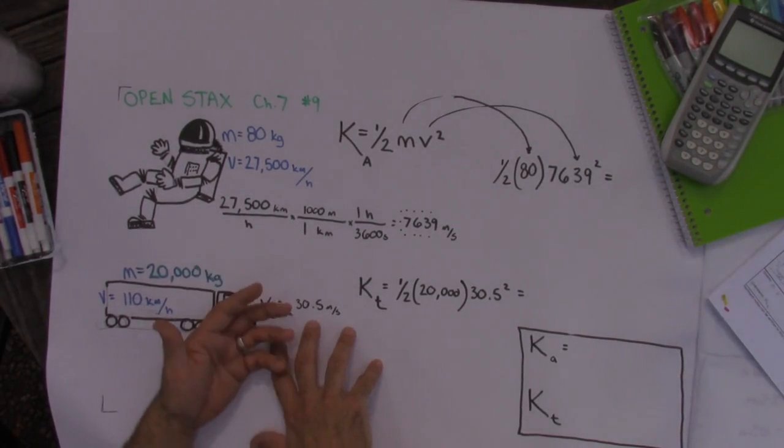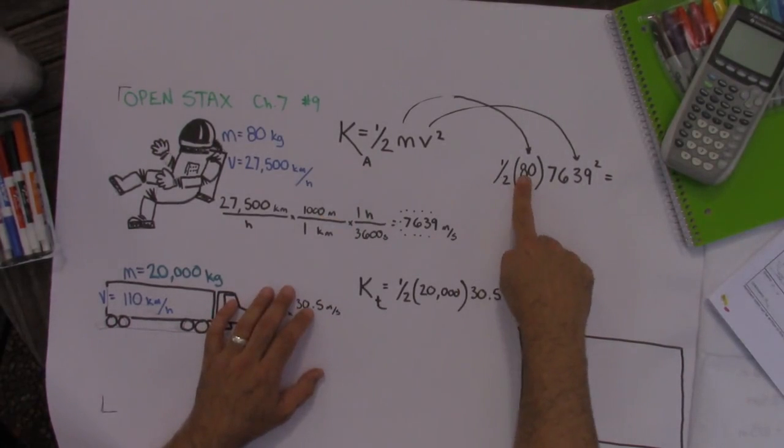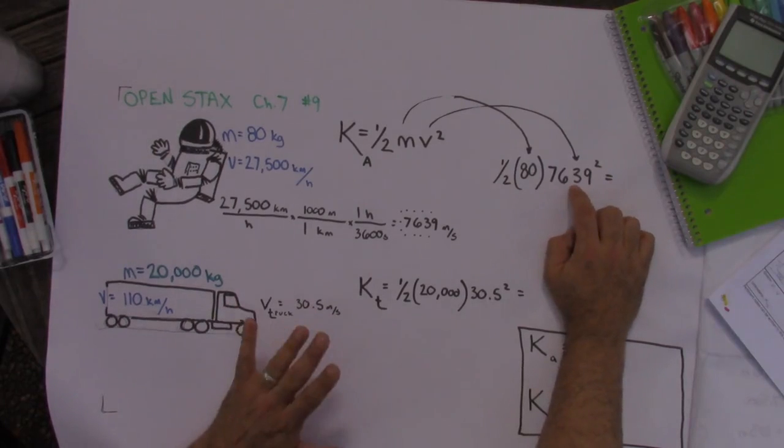So our formula for kinetic energy, one half mv squared. So I took one half times the mass of the astronaut times the velocity of the astronaut and only square the velocity. Don't square everything. Just square the velocity. And I plugged that in.